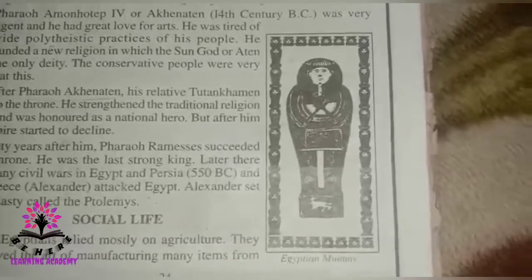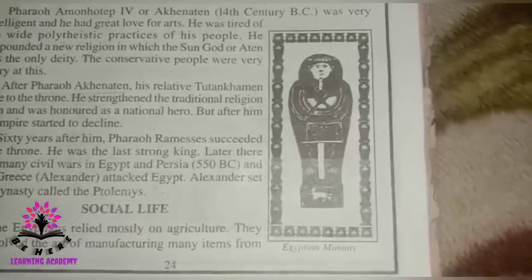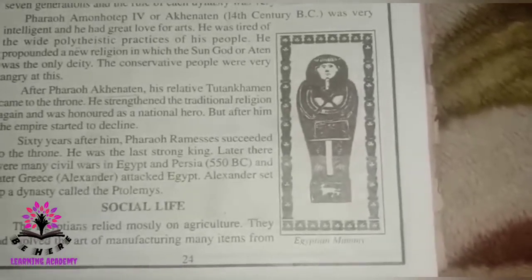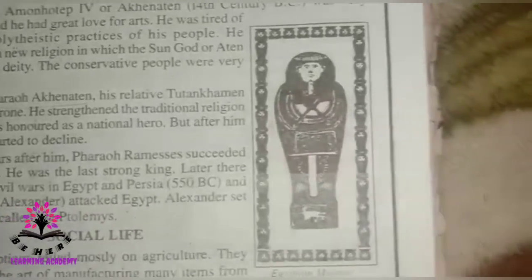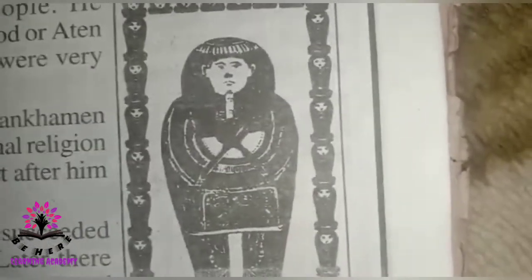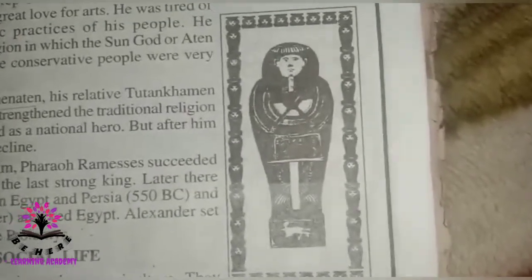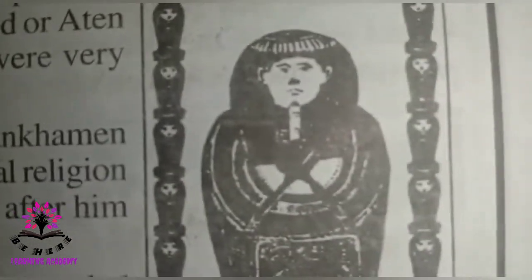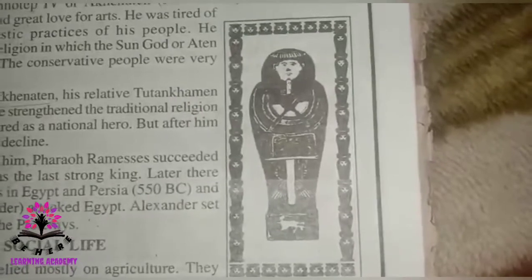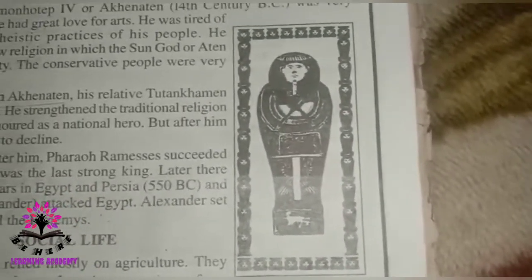What do you see in front of you? A mummy. The people of Egypt believed in life after death, so the dead body was sprinkled with various chemicals and wrapped with thin cloth. The body preserved in this way was called a mummy. That is why it is called a mummy.